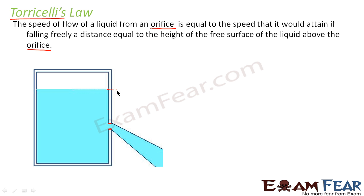This is the free surface of the liquid, and this is the slit. Let us suppose this distance is h. Then the velocity with which the liquid will flow will be equivalent to the velocity which a freely falling object attains if it is falling from height h. That is what is meant by Torricelli's law.